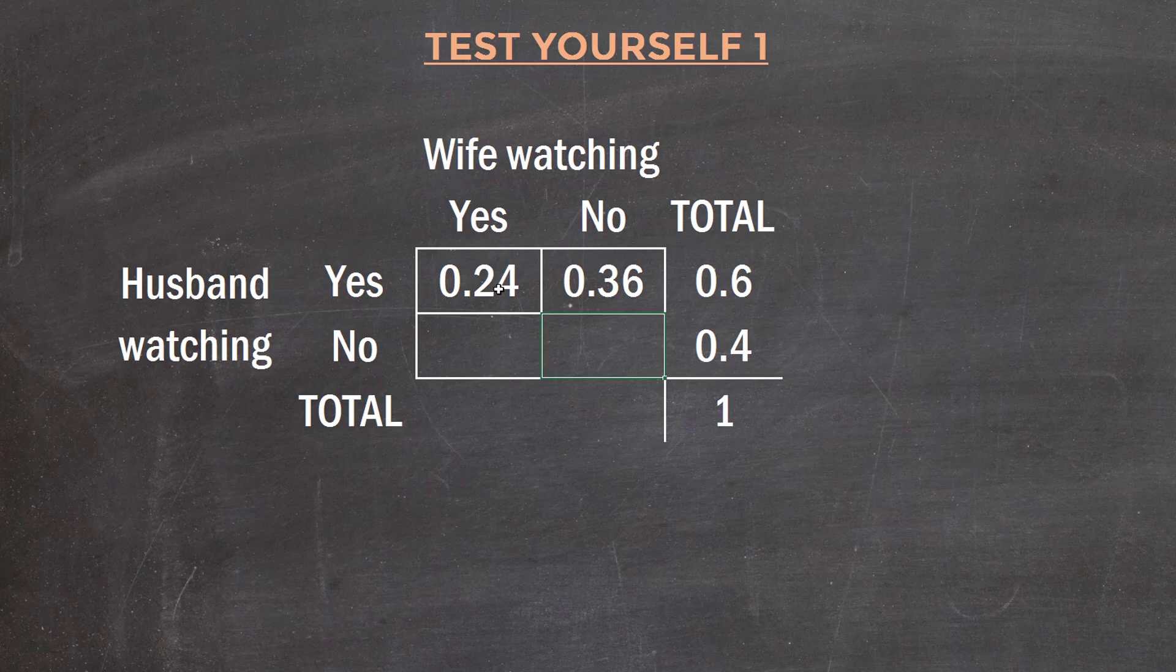The next piece says when the husband is not watching television, 30% of the time the wife is watching. So of this 0.4, 30% of that is when the wife is watching. So 0.3 times 0.4 equals 0.12, meaning this is 0.28.